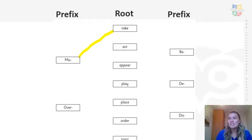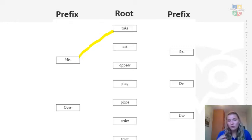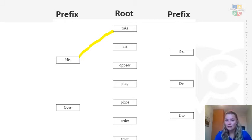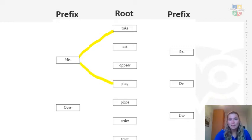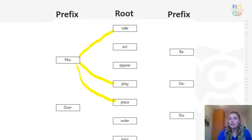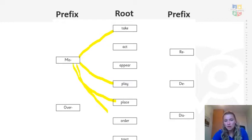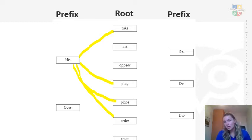So for example, mistake — well, we know that is a word because if you mistake something you haven't understood it very well. Mis-act — that's not a word, so I won't connect that. Mis-appear — that's not a word, but you might straight away think of another word which sounds similar that might have another prefix. Mis-play — so if you don't do play properly. Mis-place — that's correct, because if you mis-place something it means you forget where you put it. Mis-order works as well, because you mis-order something if you haven't put it in the correct order. But mistracked isn't a word. So now I've found all the mis ones — I've given you that example there.